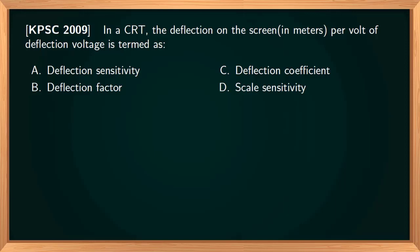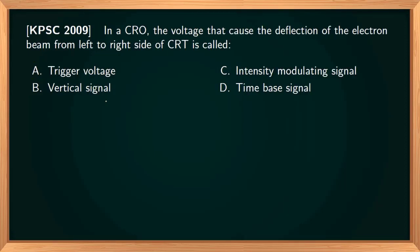In a CRT, deflection sensitivity is measured in meters per volt. It is defined as the deflection of the electron beam on the screen in meters per volt of deflection voltage applied to the deflecting plates.